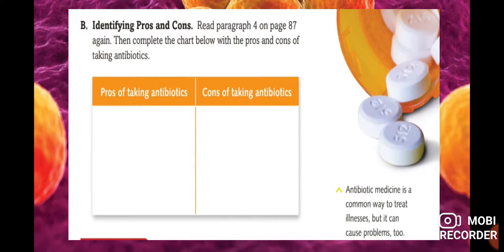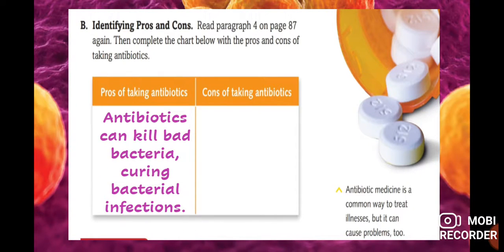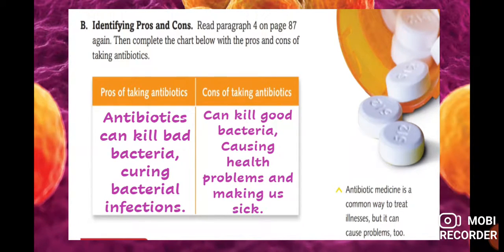Now let's identify pros and cons of taking antibiotics by re-reading paragraph four. Pros of taking antibiotics: first, antibiotics can kill bad bacteria; second, they can cure bacterial infections. Cons of taking antibiotics: first, they can kill good bacteria; second, they can cause health problems and make us sick. So we have two pros and two cons.